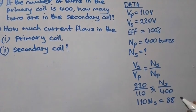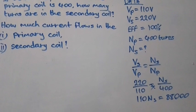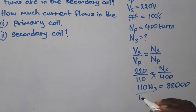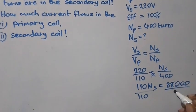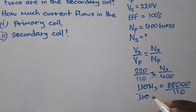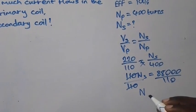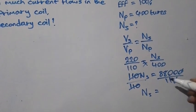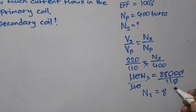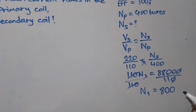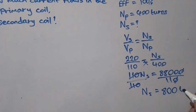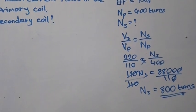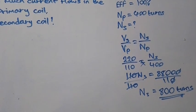So we divide both sides by 110. 11 into 88, then we add the zeros, so it is going to be 800. 800 turns is our answer.